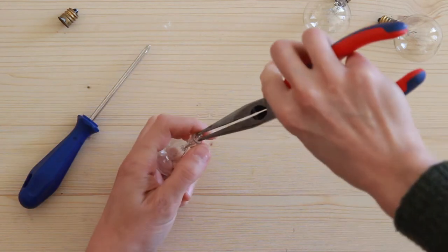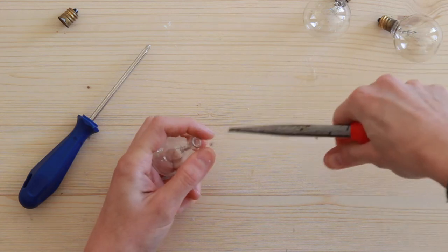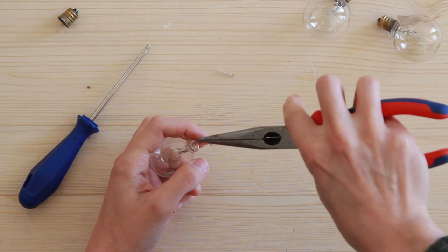Then take your pliers and pull off the glass end. You should hear a slight hissing sound. This means that the gas inside is escaping.